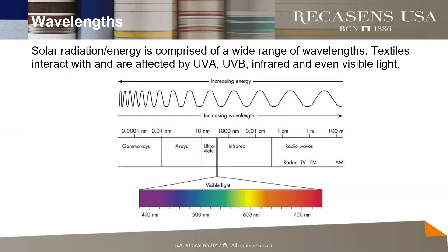Let's get started with a little science. Solar energy comes in different wavelengths, all coming from the sun. There's a graphic showing the different wavelengths that the sun emits. On one end you've got the real long wavelengths, the low energy wavelengths — your radio waves, TV, FM, AM radio waves.